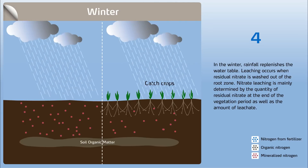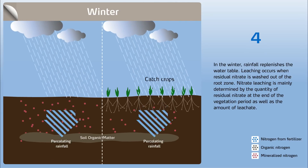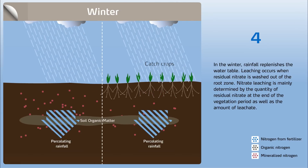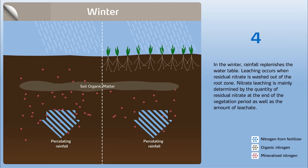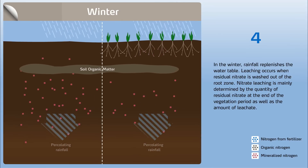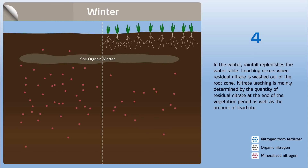Winter. In the winter, rainfall replenishes the water table. Leaching occurs when residual nitrate is washed out of the root zone. Nitrate leaching is mainly determined by the quantity of residual nitrate at the end of the vegetation period, as well as the amount of leachate.